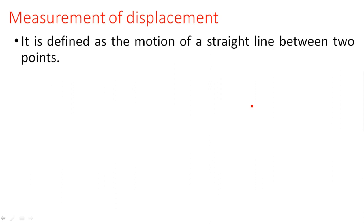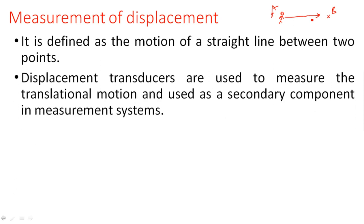Measurement of displacement is defined as the motion of a straight line between two points. Suppose if two points A and B are considered, and any object or person is moving from A to B, this is called displacement. Movement in a straight line, rotational, or angular direction is nothing but displacement. Displacement transducers are used to measure translational motion and are used as a secondary component in measurement systems.